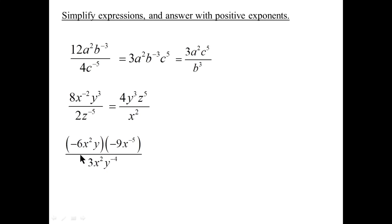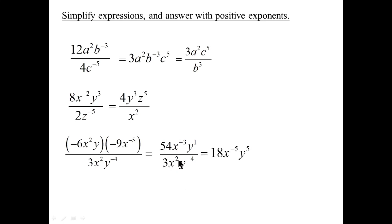Here we have a product over a denominator — let's multiply out the numerator. Negative times a negative is a positive; nine times six is 54. X to the two times x to the negative five: add the exponents, two plus negative five is negative three. Simplifying further: 54 over three is 18. Negative three subtract two is negative five. For the y's: subtracting negative four means adding, so y to the five. Since the requirement is positive exponents, shift the negative exponent across the fraction line into the denominator.